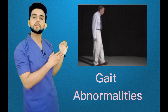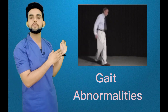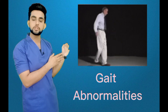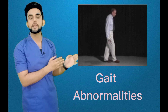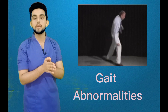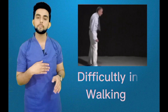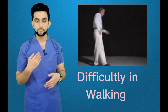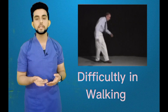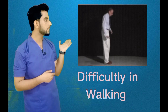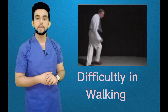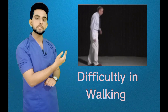We also have gait abnormalities — as you can see in the picture, a person cannot hold themselves in a proper position and balance is not well-maintained in the body. Then there is difficulty in walking and maintaining body balance.